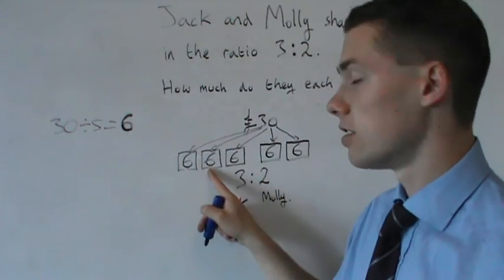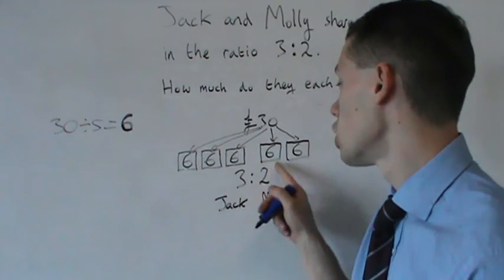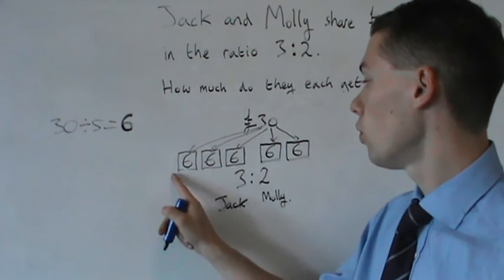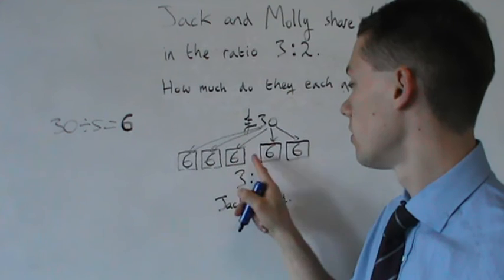6 plus 6 is 12, 12 plus 6 is 18, 18 plus 6 is 24, 24 plus 6 is 30. So I've got all 30 there, equally divided between my 5 boxes.